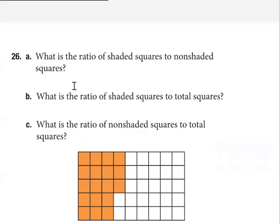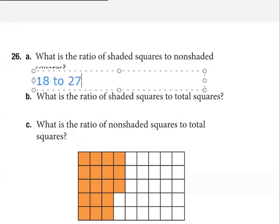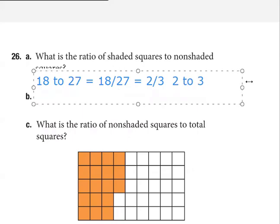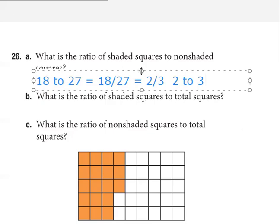So what I'm getting is 18 to 27. If you put that as a fraction, 18 over 27, and reduce it — 9 into 18 goes twice, 9 into 27 goes three times — so two-thirds is the answer, and that can be written 2 to 3. So great, that's a good job.